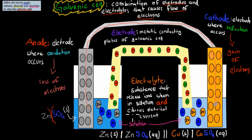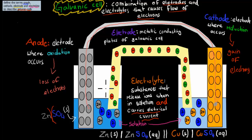It needs to be able to carry the electrical current. Without this electrolyte, we would have no electrical current passing through. So we don't need only the electrodes — which are the anode and the cathode — we also need to have this electrolyte. In this case, for the zinc half cell, we have zinc sulfate. And for the copper half cell, we have copper sulfate.